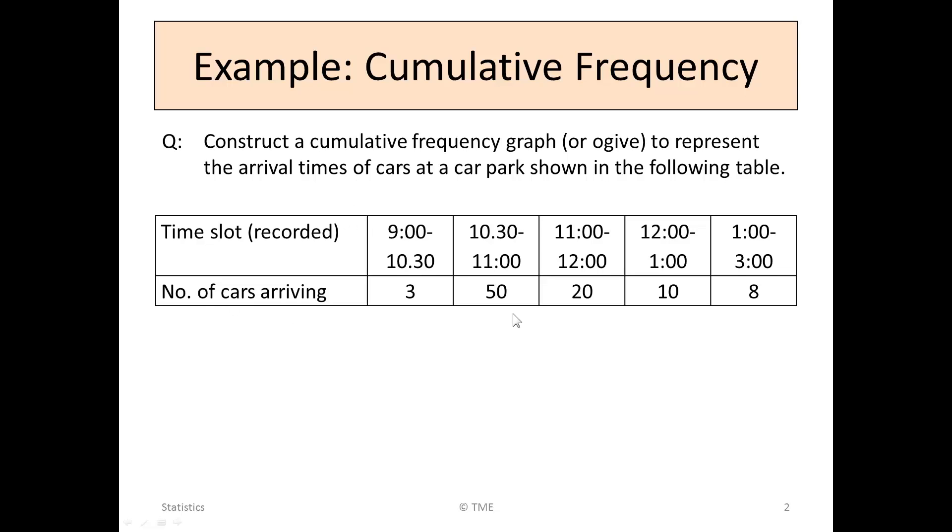If we look at this table, it represents the number of cars in a car park in various time slots. Between 9 and 10:30 in the morning, it says three cars arrived. Between 10:30 and 11, a further 50. 11 to 12, another 20. 12 to 1, another 10, and so on. This is the number of cars arriving in each of those slots.